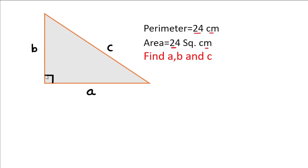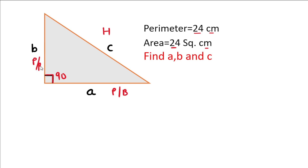This angle is given as 90 degrees, meaning it's a right angle, so the length c will be the hypotenuse. The other two lengths, a and b, could be either the perpendicular or the base.